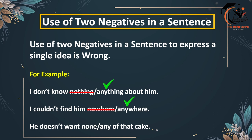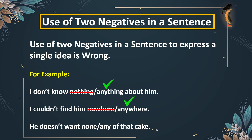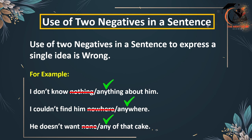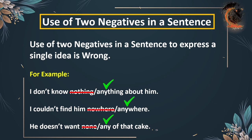Similarly, 'He doesn't want none or any of that cake.' Our sentence would become: 'He doesn't want any of that cake.' We remove 'none' because we cannot use two negatives in the same sentence to express the same idea. So this was our rule — see you with the next rule.